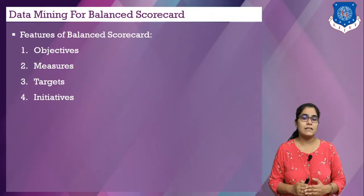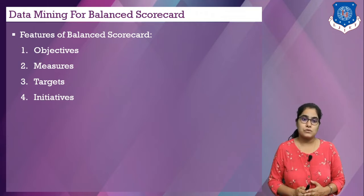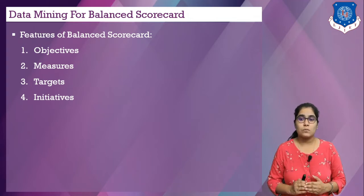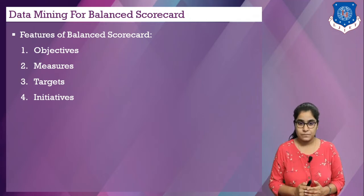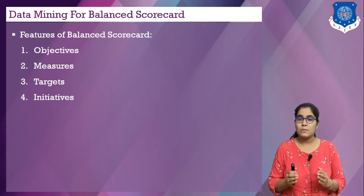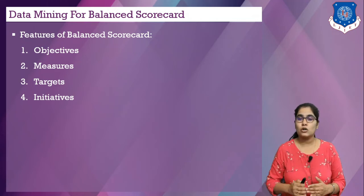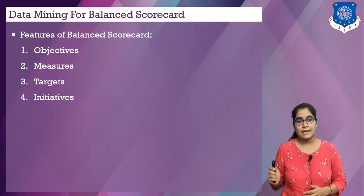When defining and assessing the four perspectives, these factors are used. First is objectives, which reflect the organization's goals such as profitability or market share. Next is measures, which are put in place to gauge progress toward achieving objectives. Next is targets, which may be department-based or company-wide, with specific targets set to achieve the measures. And last is initiatives, which are actions taken to meet the objectives.